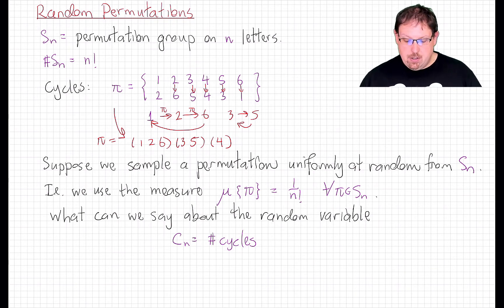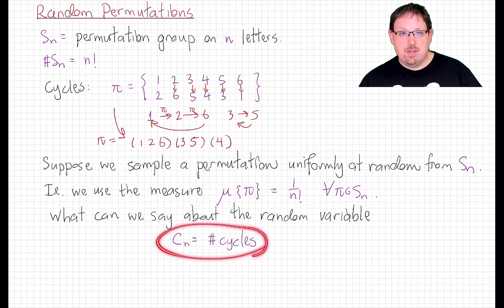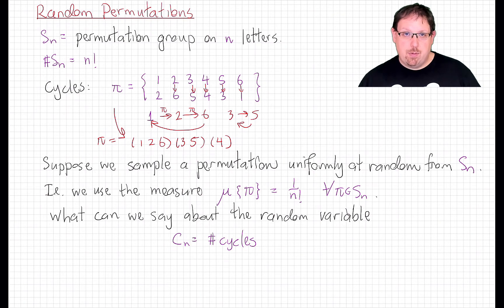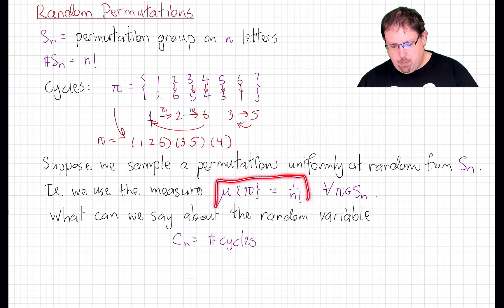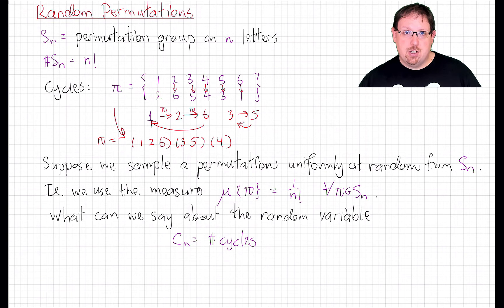So here is an interesting permutation statistic. The number of cycles. That is, if I select a uniformly random permutation, meaning that I put the following probability measure on this probability space, which I canonically equipped with the Borel sigma field of all subsets since it's finite. This is the uniform probability measure, which just assigns equal mass to each and every singleton element of the set S_n.